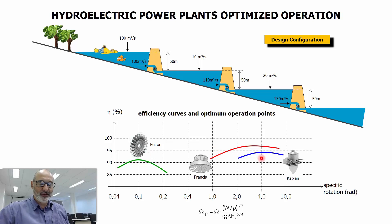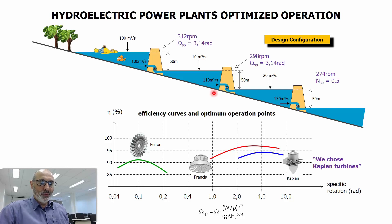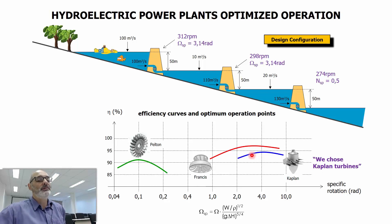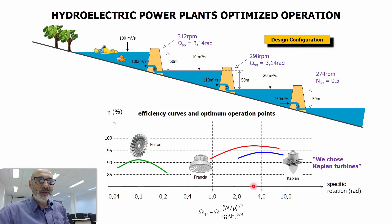When we calculate the specific rotations for our data — this height, this flow rate, and so on — we get values of 3.14 and 0.4. So we're going to choose a Kaplan turbine. 3.14 corresponds to approximately this point; we could choose Francis, but I'm choosing Kaplan because in the Tietê River they are all Kaplan turbines, to remain close to our local reality here in São Paulo.